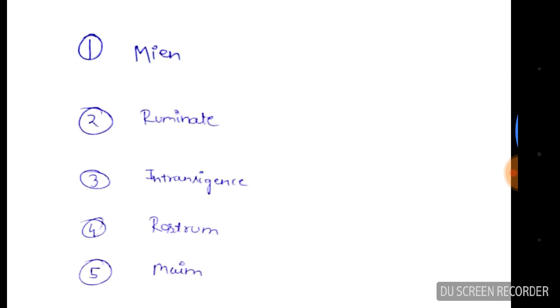Next is 'ruminate'. Ruminate. Cows, they are chewing it every time. Ruminating mostly. Cow udder means thinking about something, pondering over it. If you are pondering over something, if you are thinking over something too long, you are ruminating it. So if you think about something, you are ruminating.